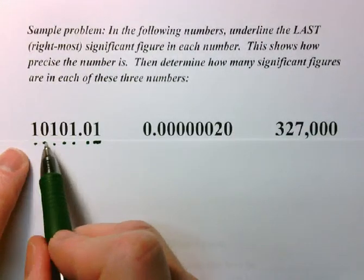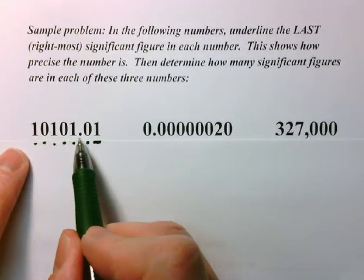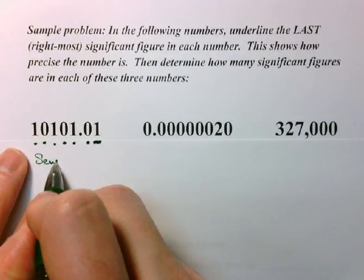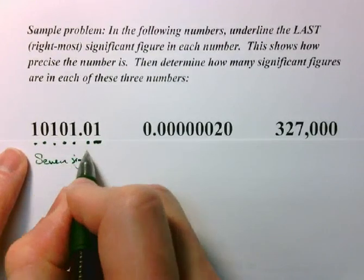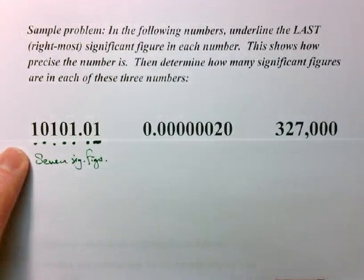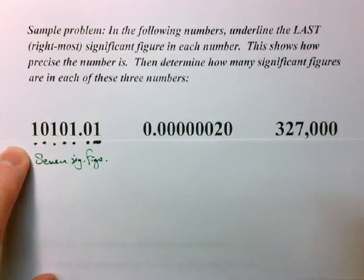And now I'm going to determine how many sig figs are in this number. One, two, three, four, five, six, seven. Seven sig figs. We write significant figures so often that it's just easier to abbreviate it sig figs.